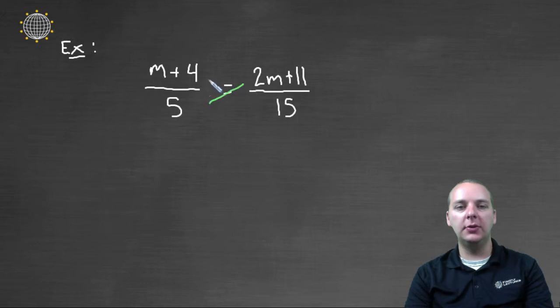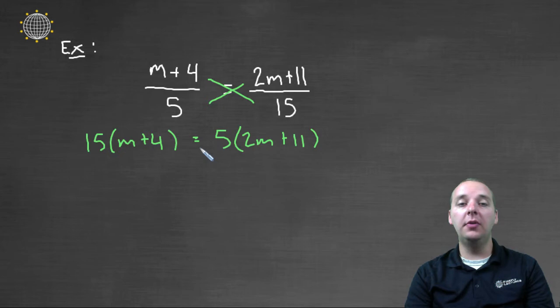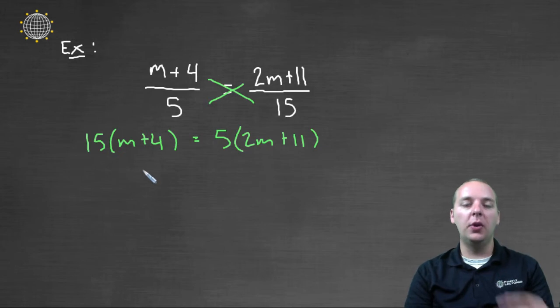So we'll multiply these two, and we'll multiply these two and set them equal to each other. So fifteen times m plus four would be equal to five times two m plus eleven. So this is an equivalent equation, but I like this one a lot better because it doesn't have fractions all over the place. We're very good at solving linear equations.